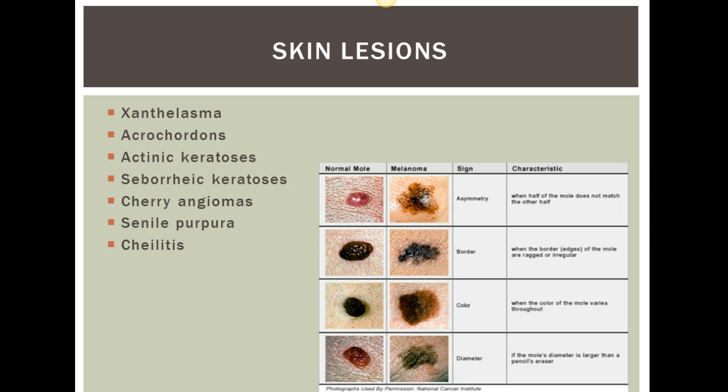With prolonged exposure to sun in the geriatric patient, there are many different skin lesions to be aware of as you're interacting with them. The first one is xanthelasma, which is a fatty deposit on the eyelid. Acrochordon are skin tags that are flesh colored.